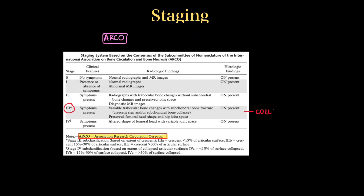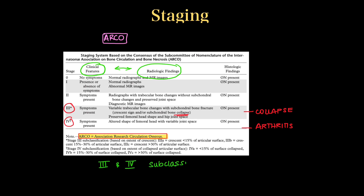ARCO stands for Association Research Circulation Osseous and involves both clinical and radiological findings, similar to the previous stagings. Stage 3 involves collapse and the advanced stage involves arthritis. Stages 3 and 4 are subdivided into A, B, and C depending on area involved: less than 15%, 15 to 30%, and more than 30%.